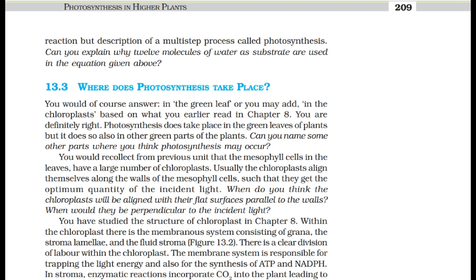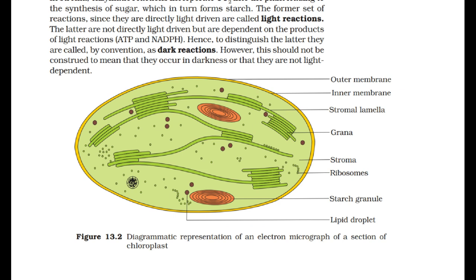Within the chloroplast, there is a membranous system consisting of grana, the stroma lamellae, and the fluid stroma. There is a clear division of labor within the chloroplast. The membrane system is responsible for trapping light energy and for the synthesis of ATP and NADPH. In the stroma, enzymatic reactions incorporate CO2 into the plant, leading to the synthesis of sugar which in turn forms starch.